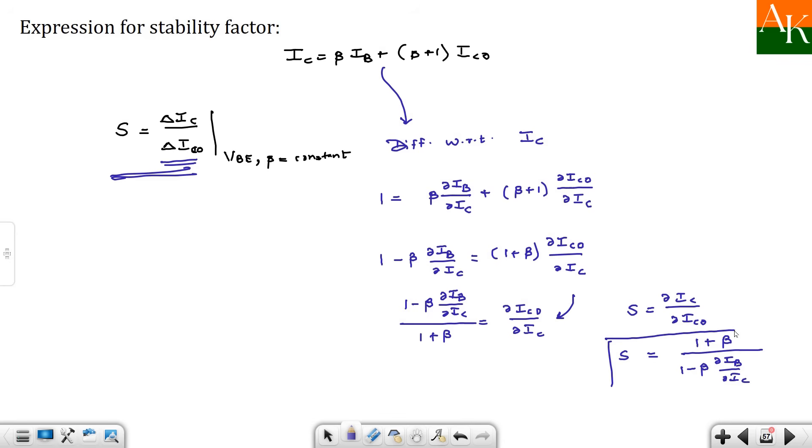So we have derived the formula for the stability factor. Then main dekhiye jo bhi circuit se agar stability factor agar zyada aadha hai that means stability is less. So let's say if you have two circuits, in one case stability factor is around 50 and in second case stability factor is around 75. Let's say this is circuit one, this is circuit two. So which one you will prefer? Naturally I will prefer a circuit with lesser S.